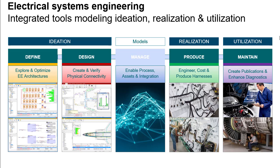On the right, the produced domain is where products are realized. Sophisticated automation is applied to the harness designs from the design domain such that bills of process, work instructions, line balancing, and so on can be automatically generated for the harness manufacturing plant. The maintained domain allows our customers to provide support for their products once they are being utilized. Highly automated tools can repurpose the existing as-designed and as-built data to create purpose-built technical documentation, including service schematics and diagnostic procedures, in output formats ranging from PDF to hosted smart web clients.